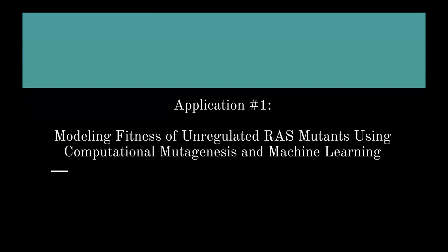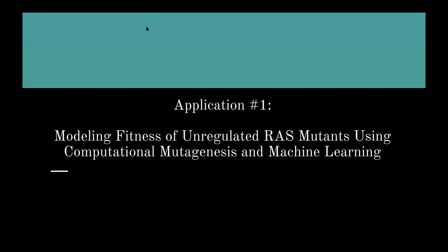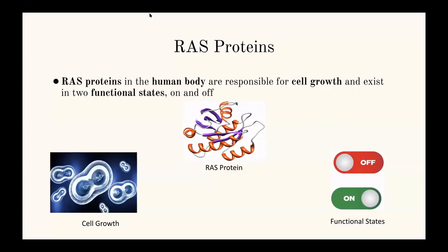Starting off with application one, it's actually a research study I was involved with for the past couple of years. It's called modeling fitness of unregulated RAS mutants using computational mutagenesis and machine learning. It sounds like a mouthful of fancy words, so we're going to break it down into simpler terms and just walk through the research.